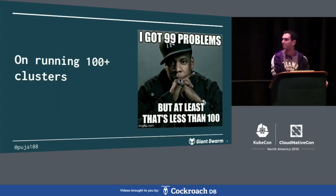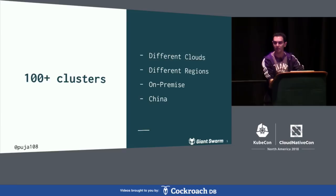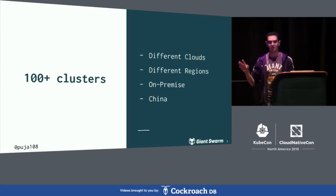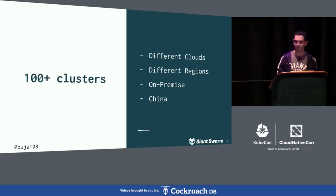Let's start with the setting. We run around 100-and-something clusters at Giant Swarm. These run on different clouds, in different regions all around the world. Some run on-premise. I list China separately here because it's kind of a different beast — I could give a full talk just on China, but hit me up afterwards if you want to hear war stories from there.